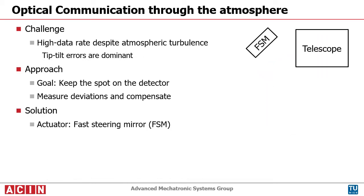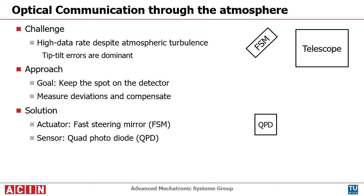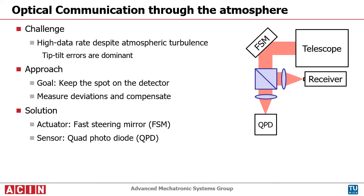The actuator is a fast steering mirror, which allows beam steering in two dimensions. A quad photo diode is used as position sensor for the laser spot. Furthermore, a beam splitter directs a major part of the received light to the communication receiver. Due to atmospheric turbulence, the received light beam moves on the receiver as well as the QPD.